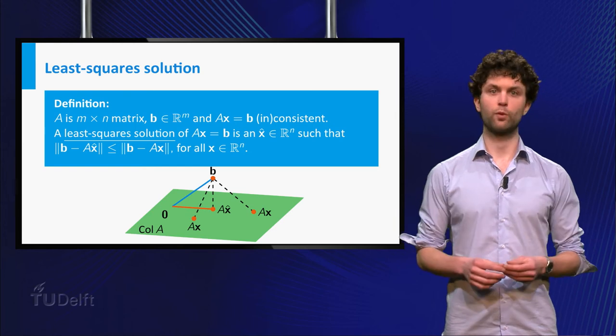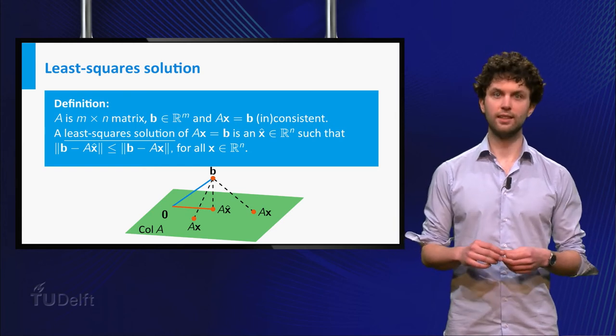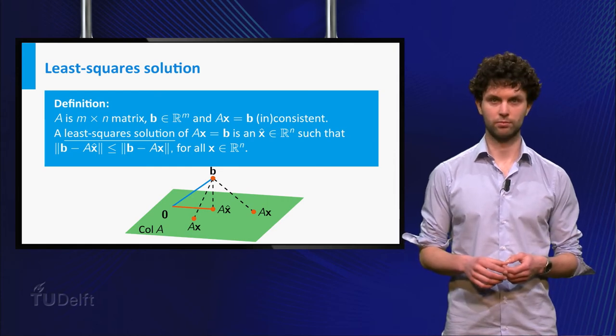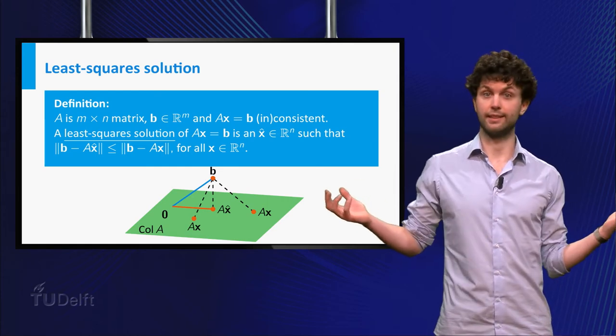The terminology least-squares stems from the fact that the distance between two vectors is the square root of a sum of squares. So how do we find this least-square solution?